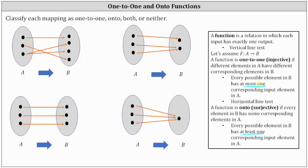Looking at the first mapping, we need to be careful — this mapping is actually not even a function. Notice how the third input has two corresponding outputs. So if it's not a function, it can't be a one-to-one function or an onto function. We'll label this not a function.